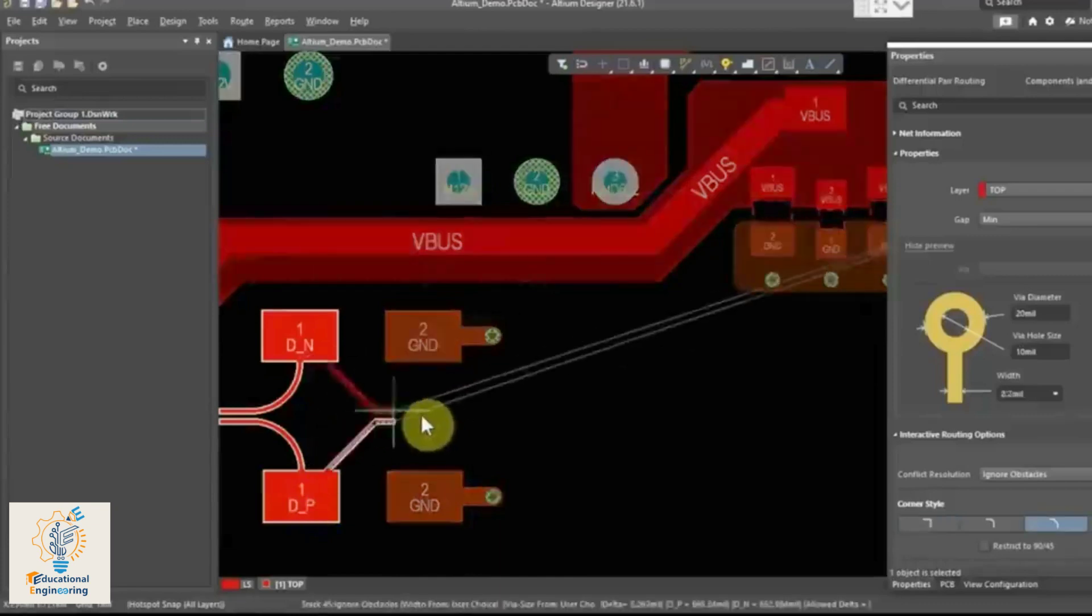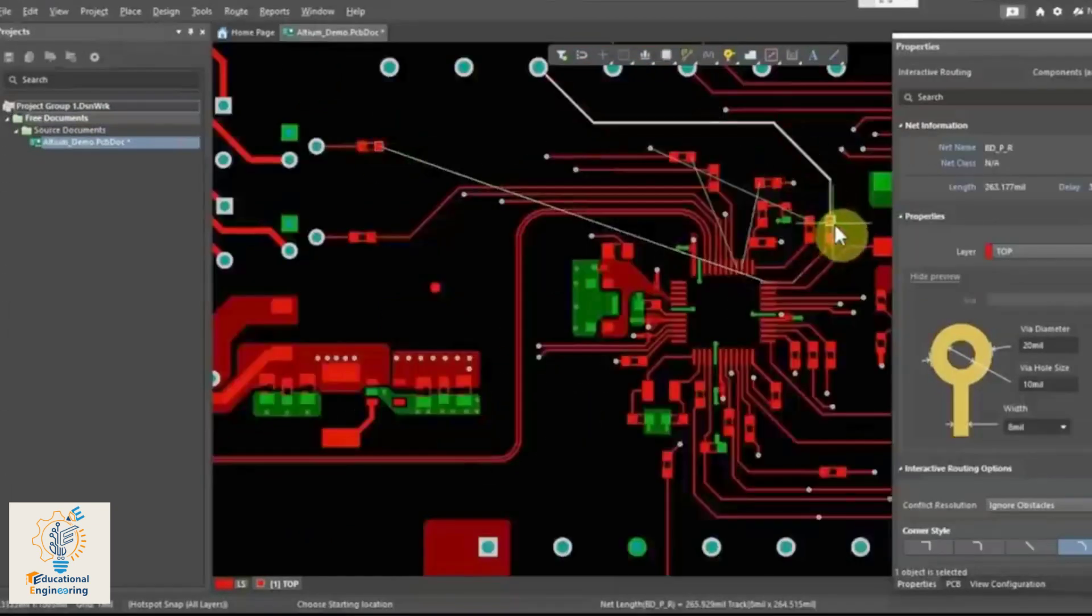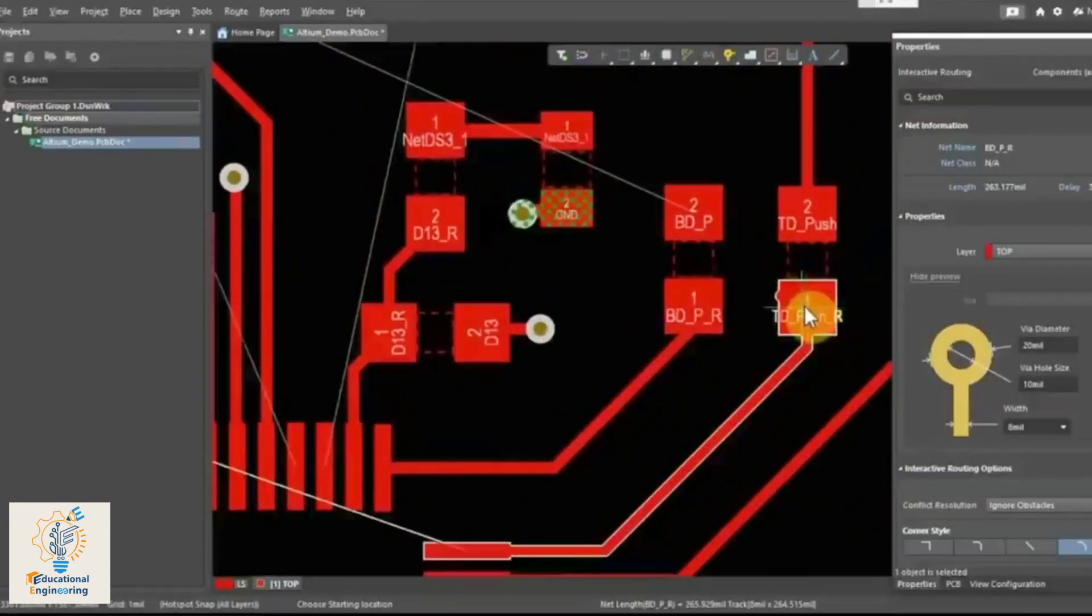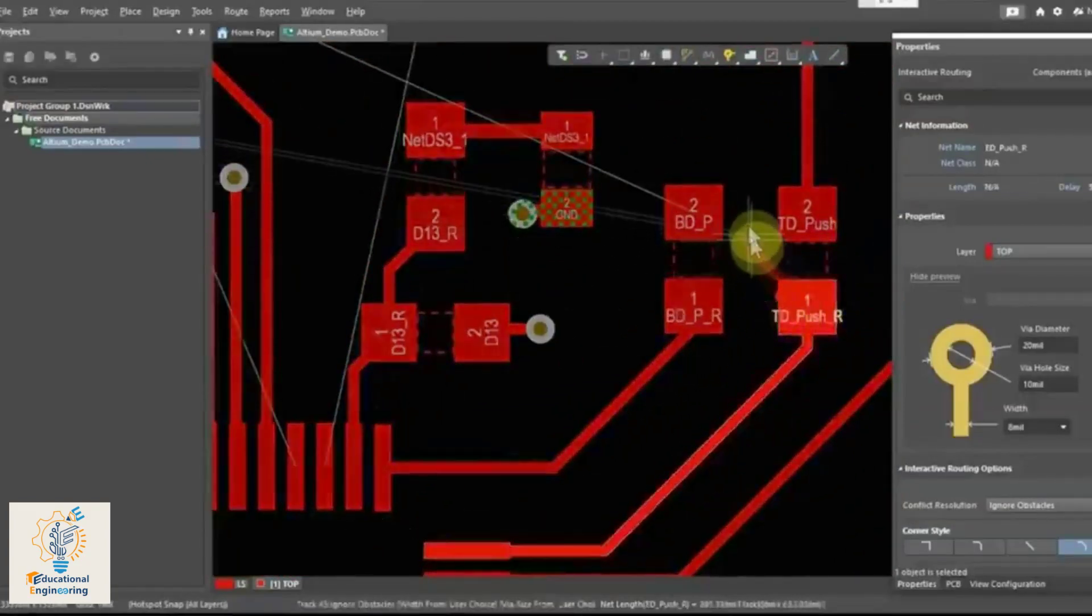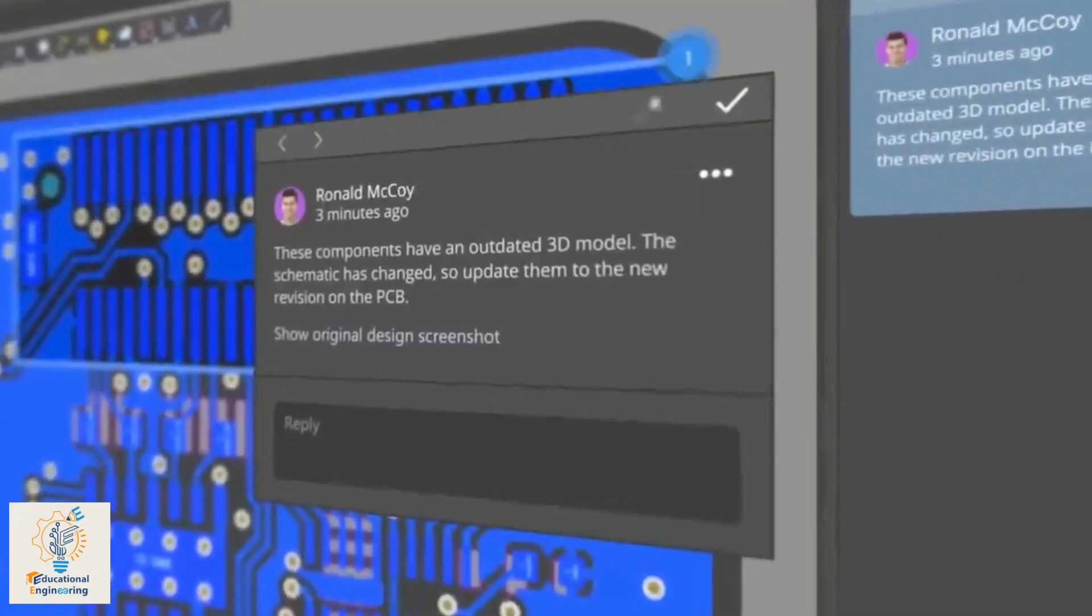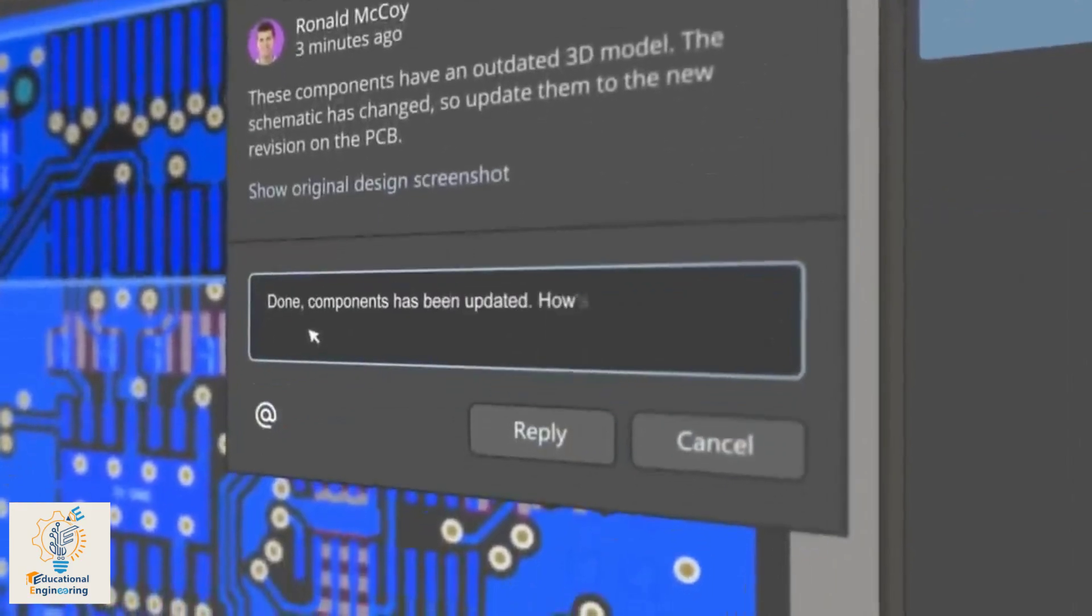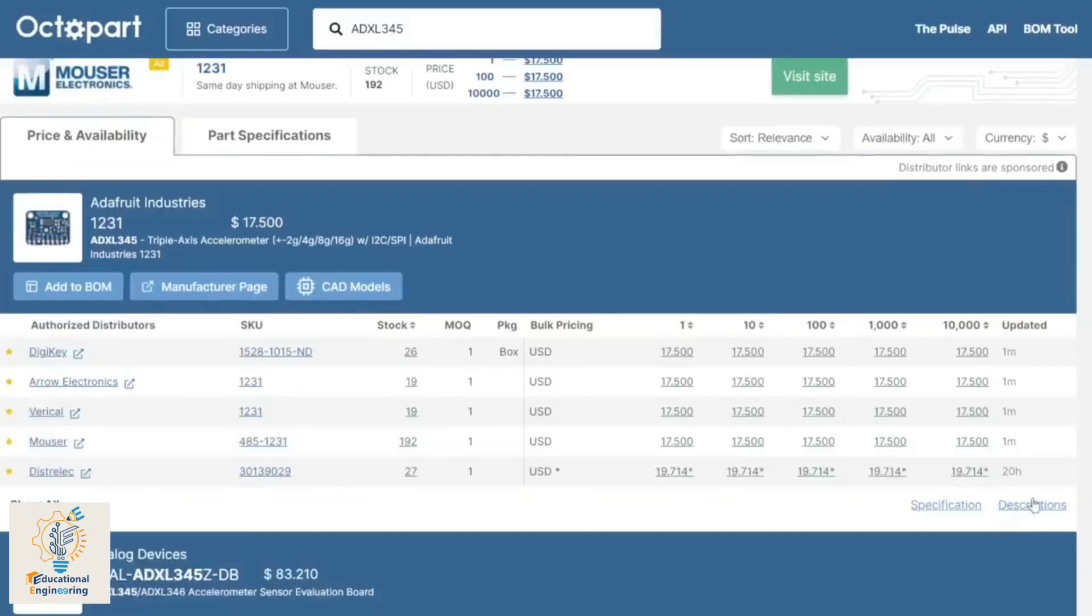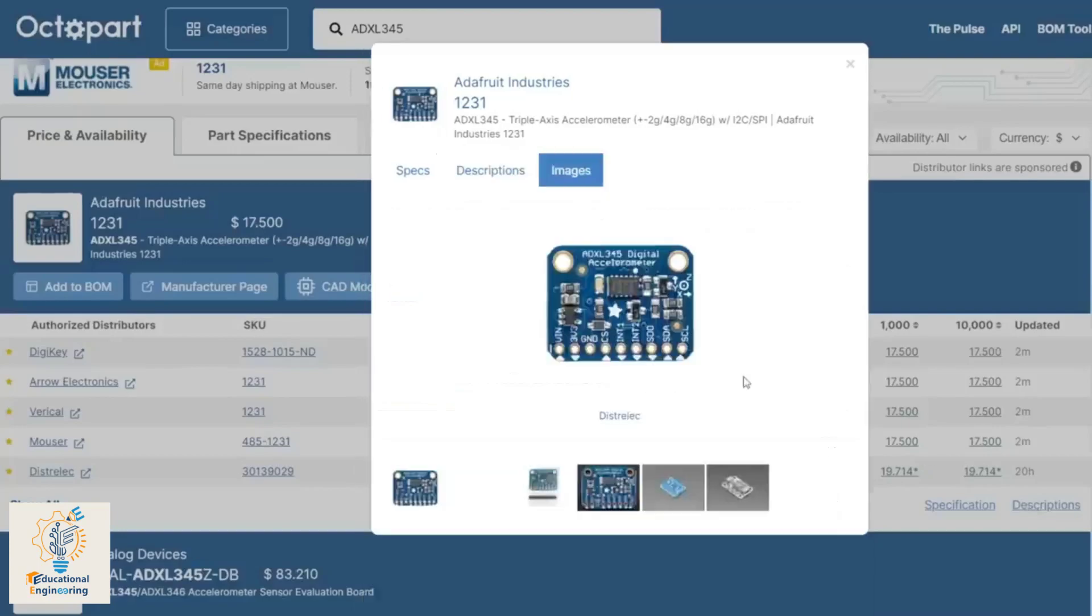Altium's a PCB design software that's both powerful and easy to use. With its intuitive interface and comprehensive set of features, Altium Designer makes it easy to create high quality PCB designs. And with all new Altium 365, now you can share your PCB designs with anyone from anywhere with a single click. With Octapart, you can get real-time component insights as you design your PCB in Altium. Check the description for more details.